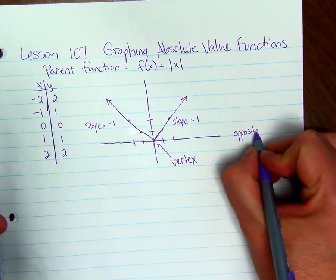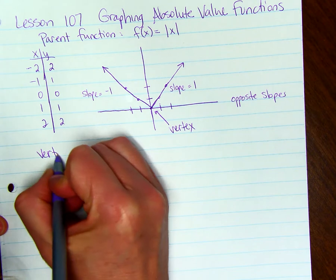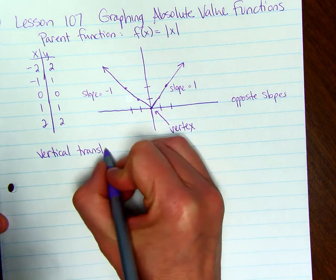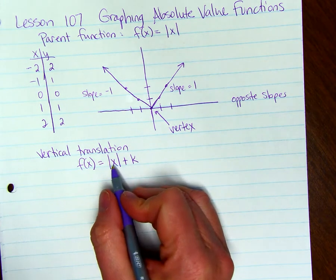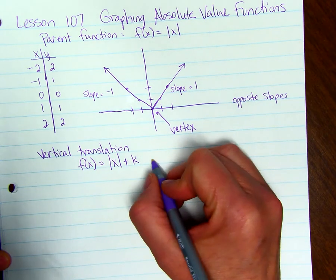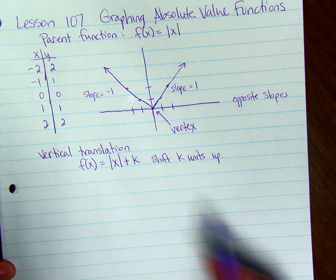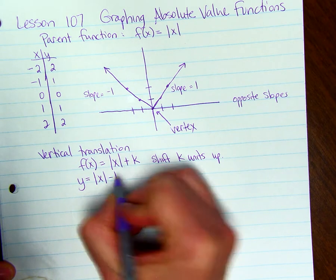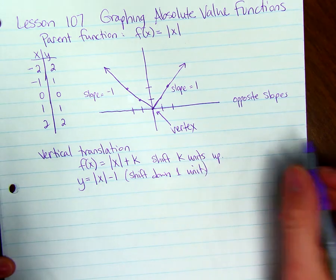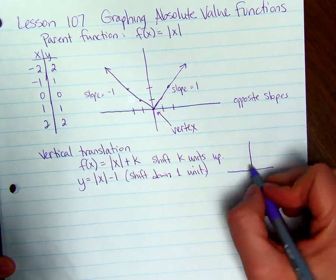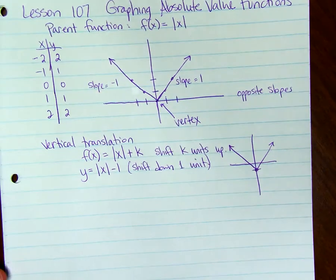They have opposite slopes when we graph absolute value functions. For a vertical translation, you're going to translate or move the graph up or down by adding or subtracting a number outside the absolute value. This shifts the graph k units up, or if k is negative, that many units down. For example, y equals the absolute value of x minus 1 shifts down one unit, so the vertex goes down one and every other point goes down by one.